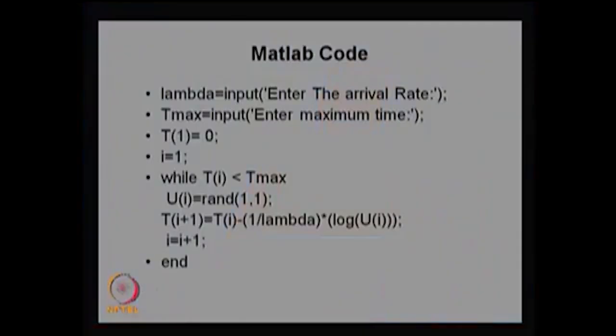I am going to explain how we can create the sample path of the Poisson process using the MATLAB code. Since the Poisson process is related with the inter-arrival times or exponential distribution, I can start with time 0 where there is no customer in the system and go for what is the maximum time I need the sample path. Then I can keep creating random variables and from those random variables generate the exponentially distributed time events.